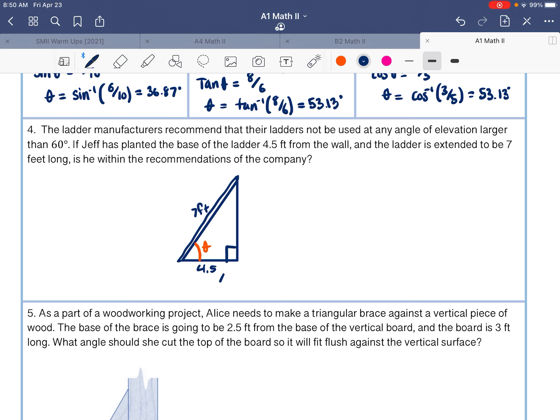So on this one, we should be using cosine because it's adjacent and hypotenuse. So we'll do cosine of our unknown angle is equal to the adjacent over the hypotenuse. And then we just invert cosine. So then we have cosine inverse of 4.5 over 7, which gives us a value of 49.99 degrees.